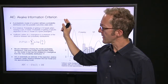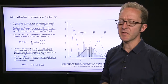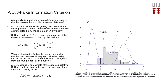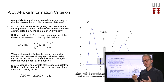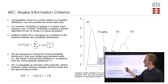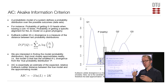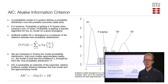Let me briefly run through how the AIC works. When you have a probabilistic model of some system that you're analyzing, that means you're able to compute the probability for any possible outcome, for any possible data set.